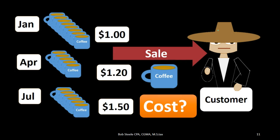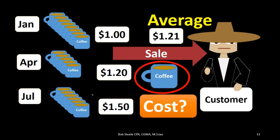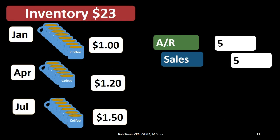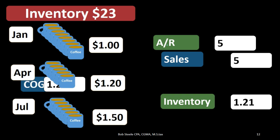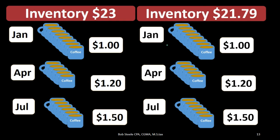The last assumption is somewhere in the middle — the average method. We say we don't know which mug we sold, so we're not even going to make a directional assumption. We'll say the mug sold cost about $1.21. To get that average properly, we take a weighted average: the number of cups at each price times that price, all divided by the total number of cups. The sales price is still $5, but inventory goes down by $1.21 and cost of goods sold is $1.21. Starting inventory of $23 minus $1.21 leaves ending inventory of $21.79 under the average method.